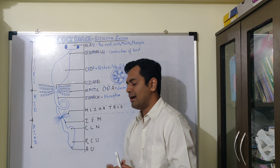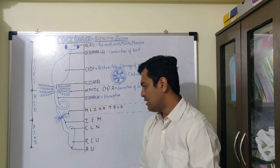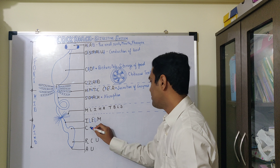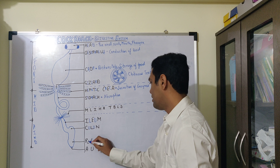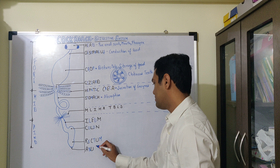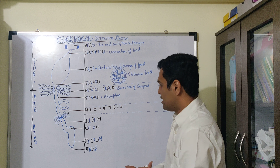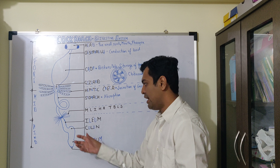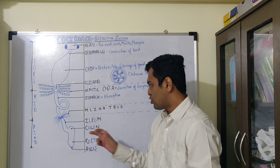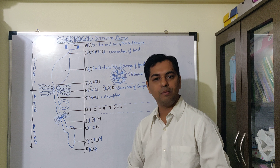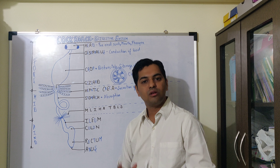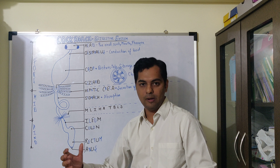Then comes the final part, that is the hindgut. The hindgut consists of the ileum, colon, rectum, and anus. The parts of the hindgut are comparatively wider than the midgut structure. Through this, the undigested food will be passed and it will be eliminated through the anus, which is present at the 10th tergum, that is the 10th abdominal segment.